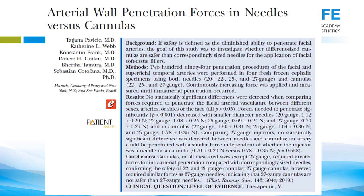Looking at this study critically: it does show that a 27 and 30 gauge cannula can be as sharp as a needle, but that's only true of one manufacturer that they studied. They only studied one manufacturer — whose name does not even appear in the study, which is unusual. There are many different micro cannulas on the market made by numerous manufacturers. People who assume this study says all 27-30 gauge micro cannulas are as sharp as a needle are wrong — they only tested one manufacturer. You can't extrapolate that all small gauge micro cannulas are dangerous.